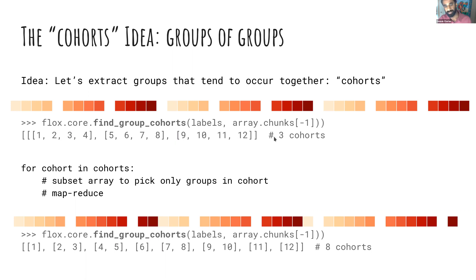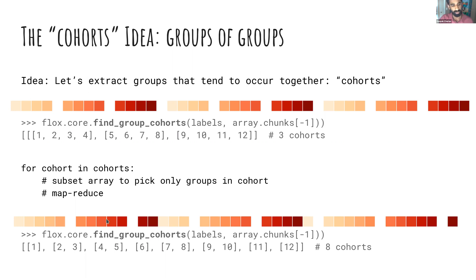This is where I have one original idea: cohorts, or groups of groups. Groups tend to occur together, and if we're lucky, we can pick groups that always co-occur in the same chunks. A helper function detects cohorts: months 1, 2, 3, 4 are always in the same chunks; similarly 5–8 and 9–12. We have three cohorts, loop over them, subset the array to each cohort's groups, apply map-reduce, and get results for those months. This avoids unnecessary communication.